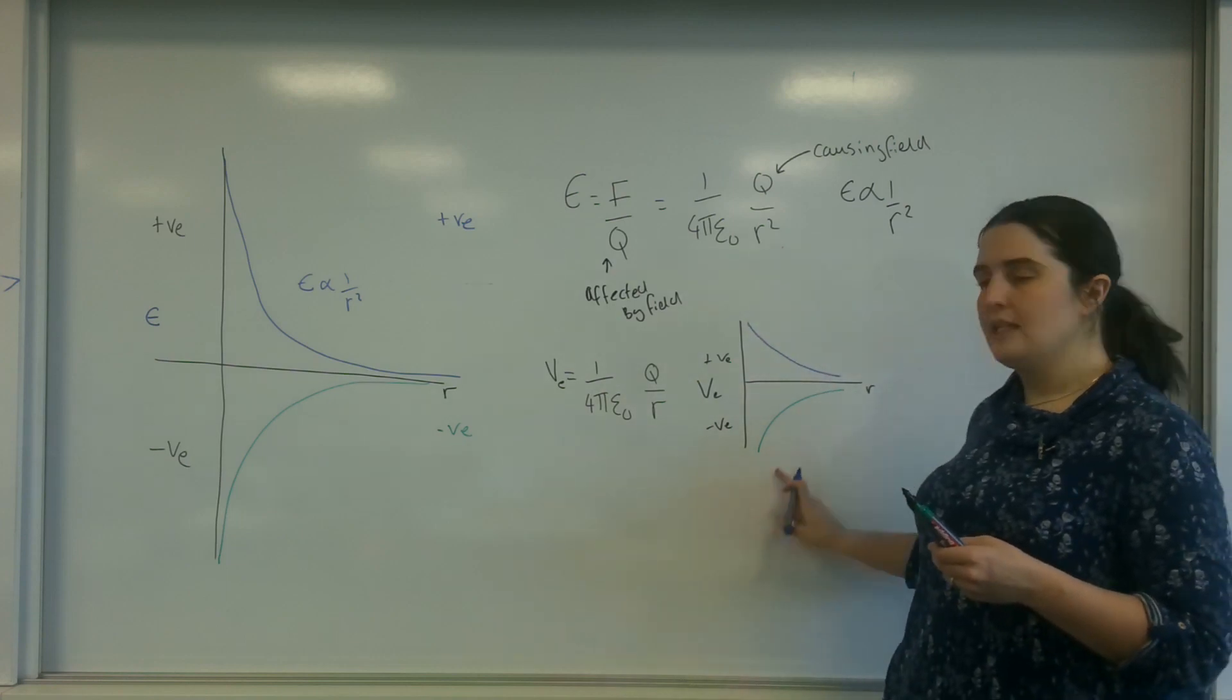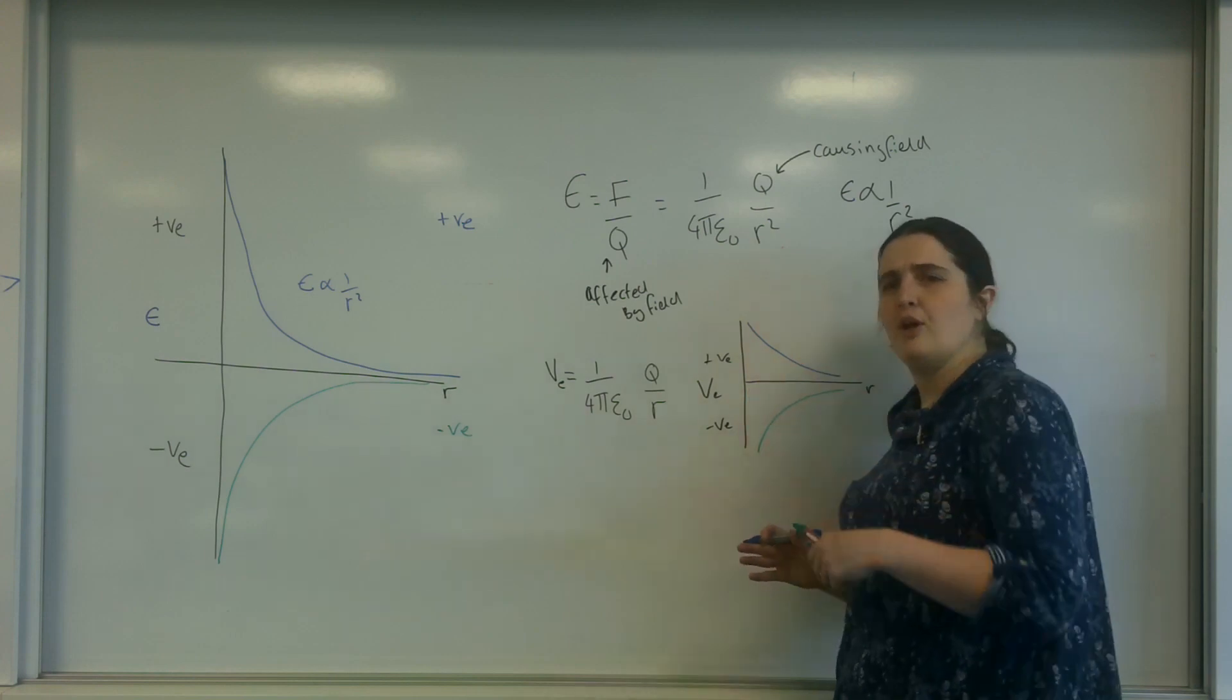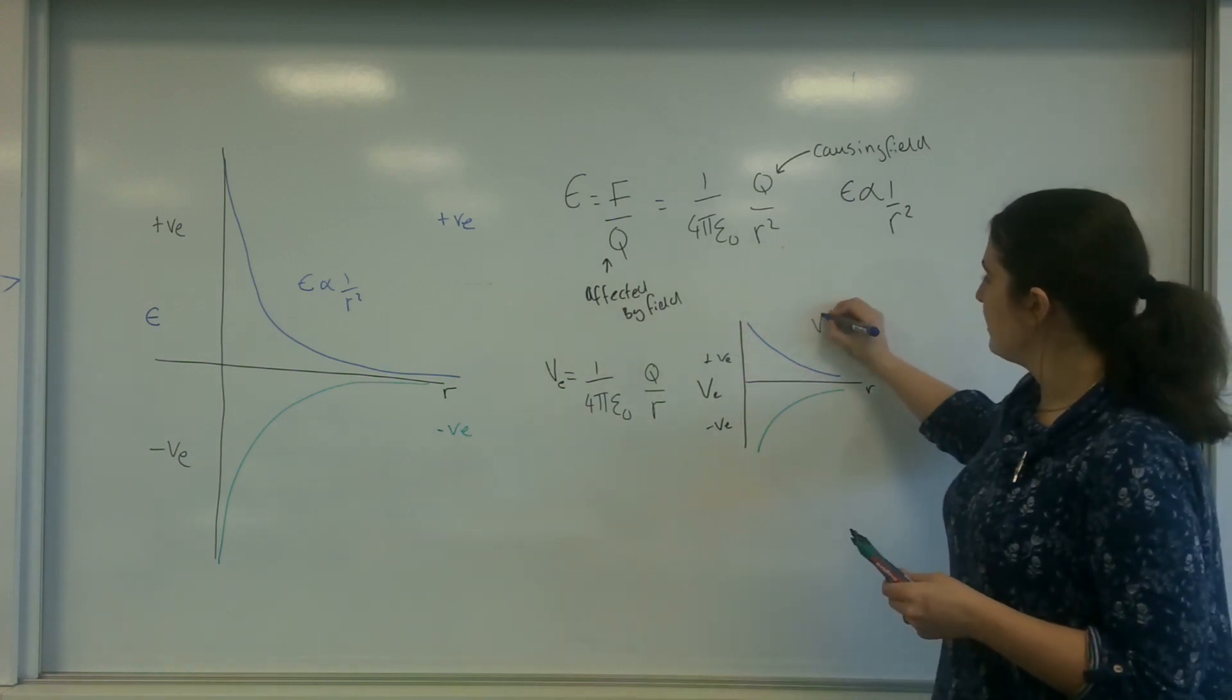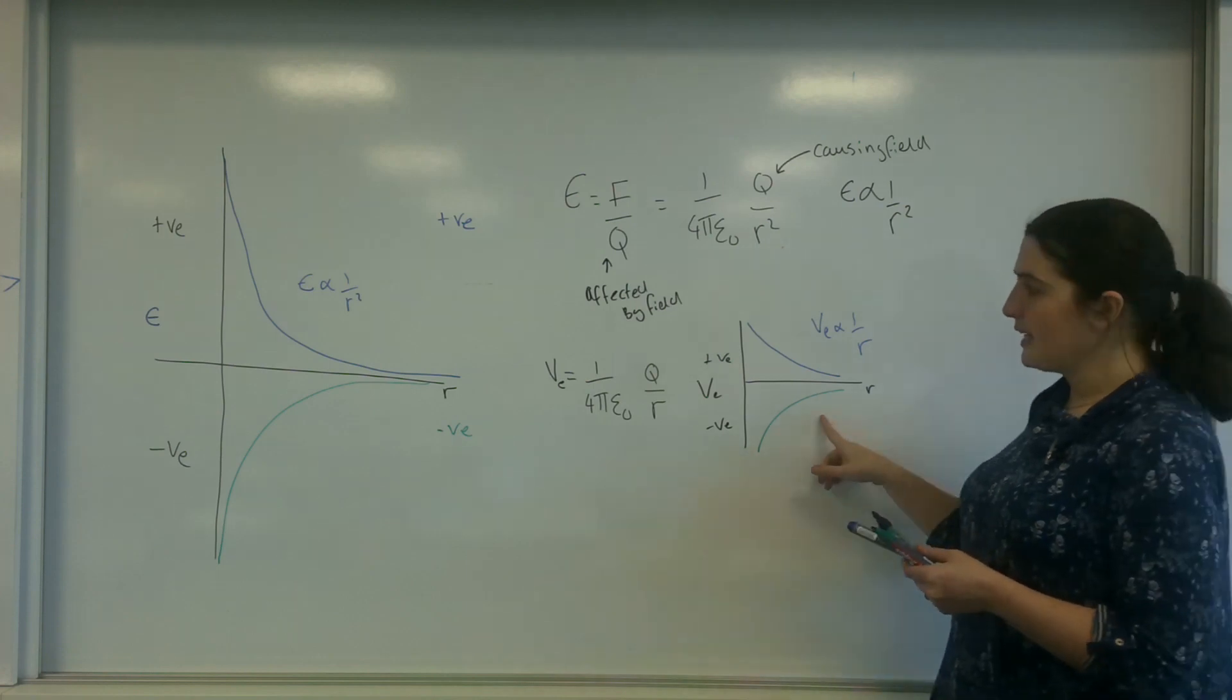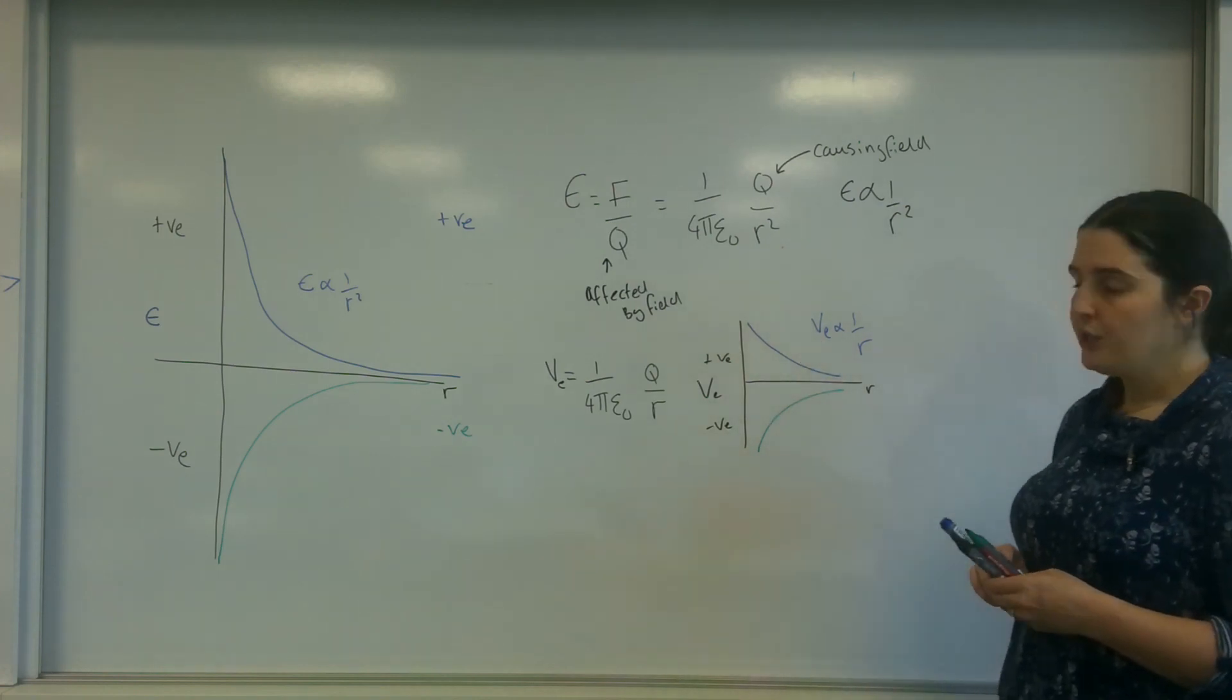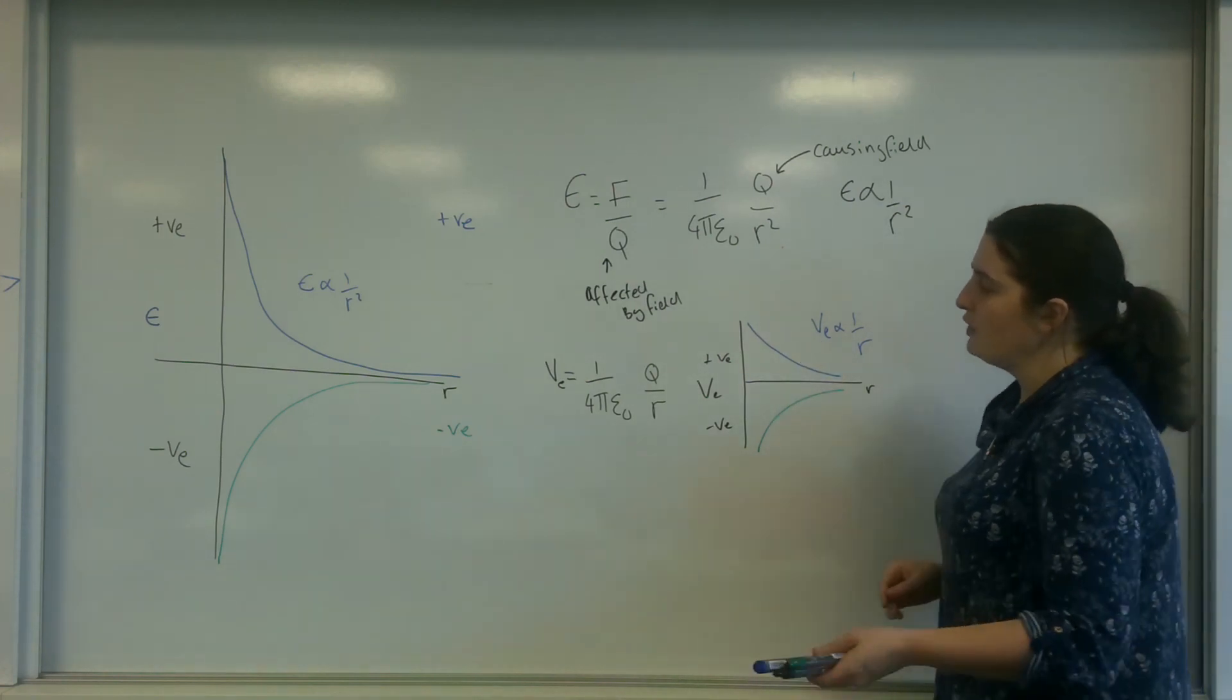But as you can see, the steepness of my curve, the dip of my curve, is much smaller. Because here, potential is proportional to 1 over r. And of course, this is a negative charge and this is a positive charge. But what I want you to do today is actually have a look at this.